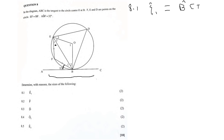So for the first part we need to find E1. E1 will be 32 degrees because of the tan-chord theorem. Therefore E1 equals 32 degrees — that's based on the tan-chord theorem. Now we continue, and they're asking us to find angle F.